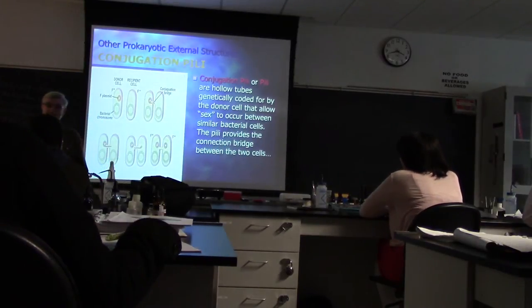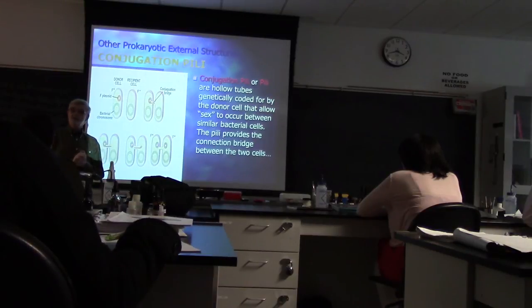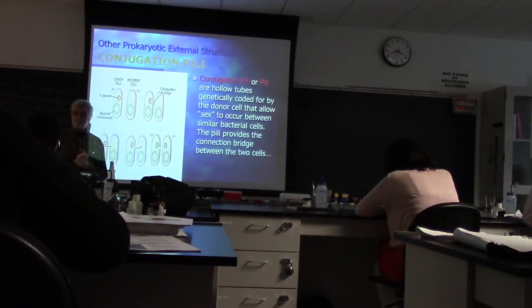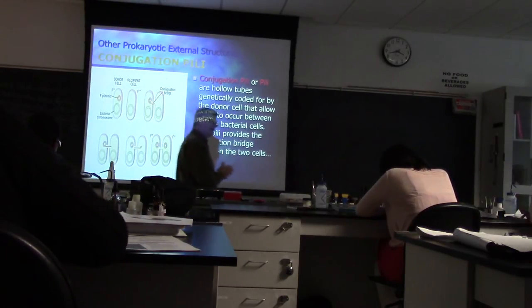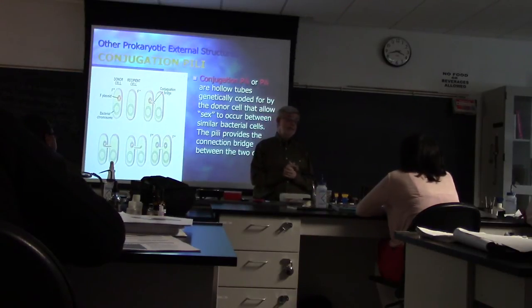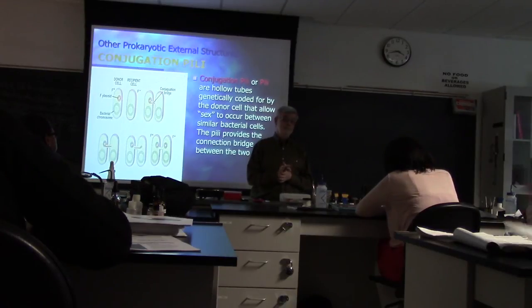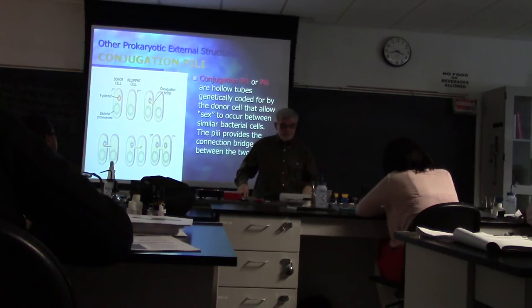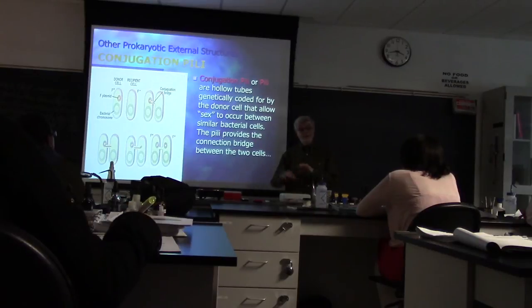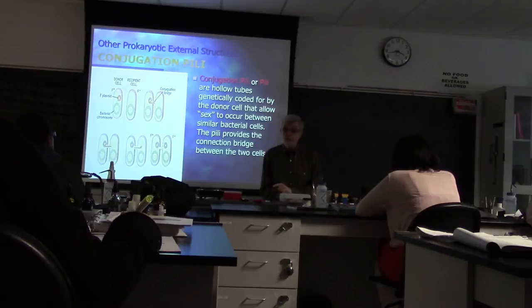Conjugation in bacteria usually happens only in gram-negatives. We do know that a large amount of DNA is moved — up to 51 genes. You'll be asked which of the ways of horizontal gene transfer moves the most genes. Conjugation moves 51 at maximum.